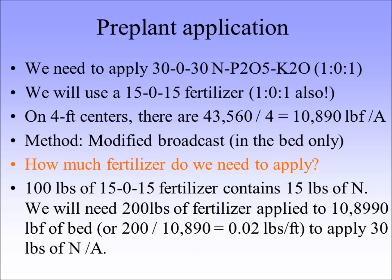How much fertilizer do we need to apply? 100 pounds of 15-15 contains 15 pounds of N, so we'll need twice as much to put 30 — that means 200 pounds of that fertilizer. Dividing 200 by 10,890 shows that you're going to have to apply the equivalent of 1.02 pounds per foot of bed. That's what it boils down to.